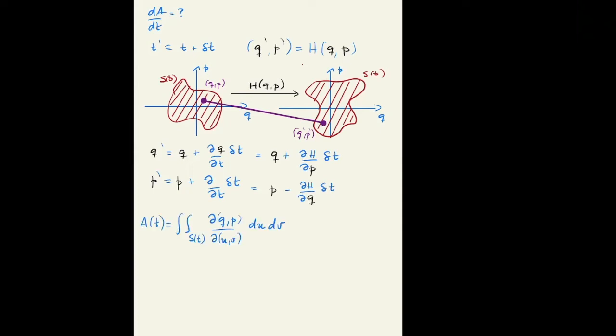And as an area, at time T, the area A(T) was the integral over the surface ST. The new area A prime with the new coordinates Q prime and P prime is going to likewise be the area now over the surface ST prime that was mapped by the Hamiltonian acting on the surface ST. And now the coordinates QP in the Jacobian are going to be Q prime and P prime.